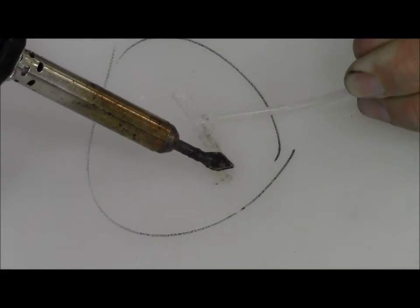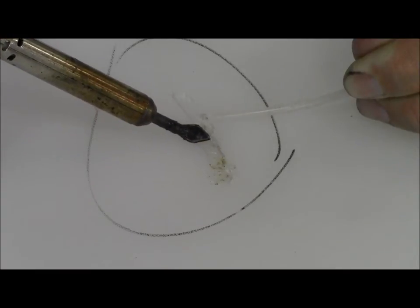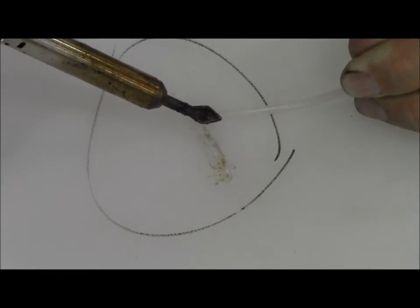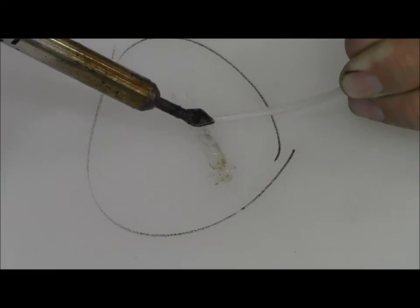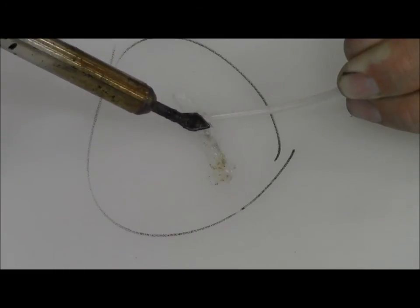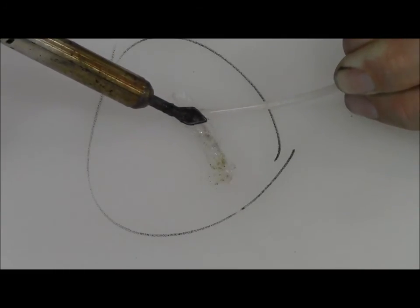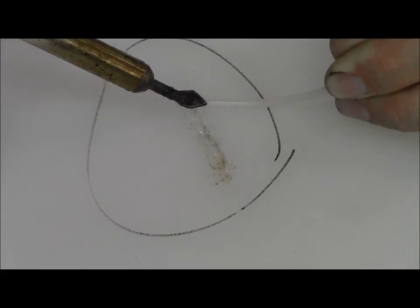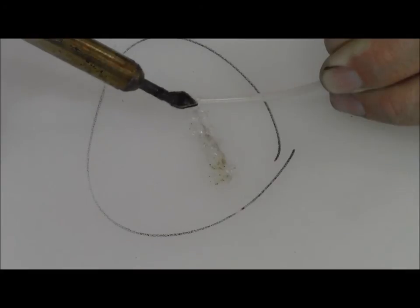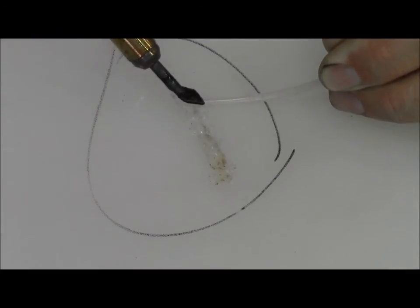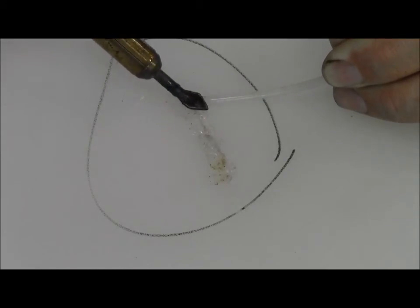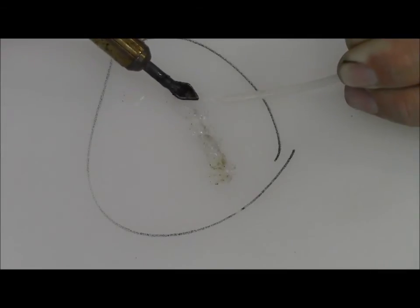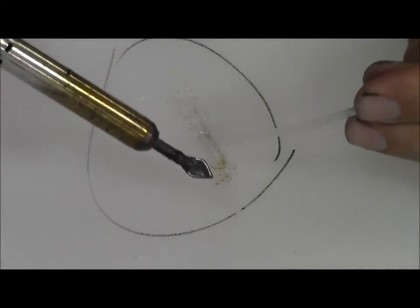Once we get some material in there, then we can come back and start smoothing it out. Another tip for you is time of year that you do this can play a factor of how well you get it to work. What I mean is if you're doing this repair in the middle of the winter, you might want to get a heat gun and heat the tank and also heat your filler material like this rod.